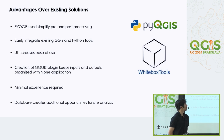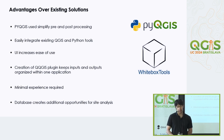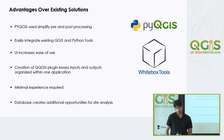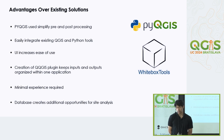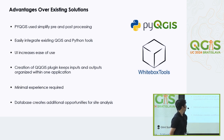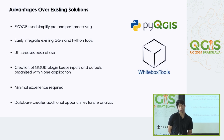The advantages over existing solutions: we use PyQGIS to simplify pre- and post-processing — it's a bunch of processing plugins connected together, making it easy to use, automated, with databases created for use inside the algorithm. It integrates easily with existing QGIS and Python tools such as the Profile Tool. The UI increases ease of use and is important for internal adoption as well as broader adoption — minimal experience is needed. The QGIS plugin concept keeps inputs and outputs in one space, and the database creates additional opportunities for site analysis. The data is stored in a Pandas DataFrame and can be worked with afterwards.